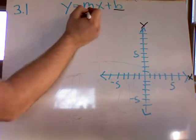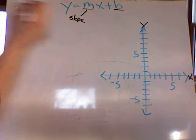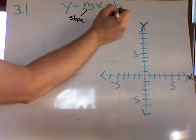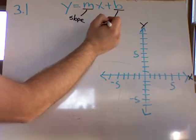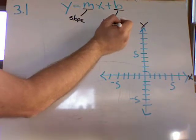There's the m and the b. The m is called the slope, which we're going to talk about in the next chapter, and b is the y-intercept.